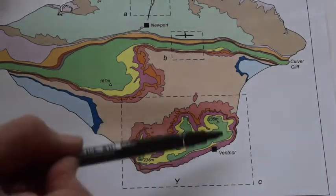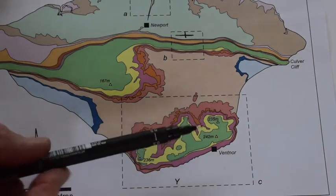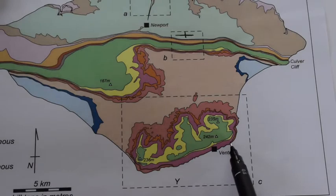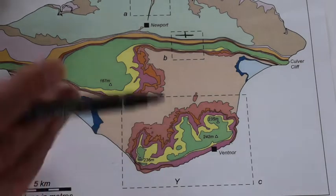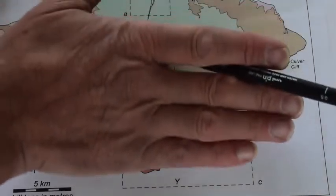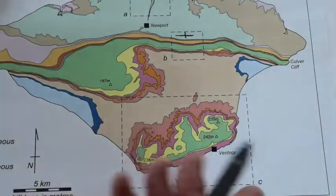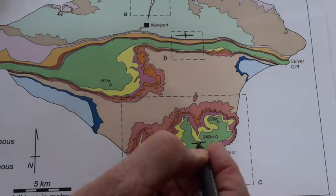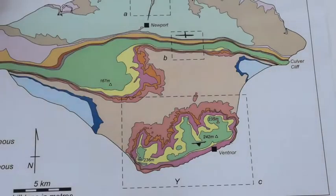So these rocks are essentially rather gently dipping or flat lying. If anything they dip south because these rocks come down to the sea either side of the town of Ventnor, suggesting they gently dip down this way towards the south. So I'll just mark this with a symbol like this just to say these rocks are essentially gently dipping southwards.